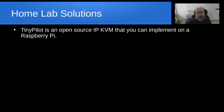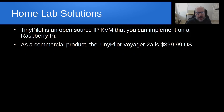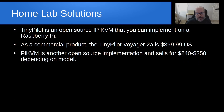So we need some homelab solutions, and there are some out there. TinyPilot is an open-source IP KVM that you can implement on a Raspberry Pi, and you can actually buy one pre-assembled as a commercial product called the TinyPilot Voyager 2A, and it is $400, which is pretty pricey.